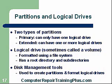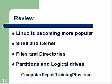In review: Linux is becoming more and more popular and is growing, though it probably won't take over completely. Shell and kernel are the two things that compose an operating system — the shell for the user interface and the kernel as the core. Files and directories are how we set up our hard drives, with directories, subdirectories, and files inside. We need organization, or we'll have chaos. Partitions and logical drives are how we divide up our hard drives.